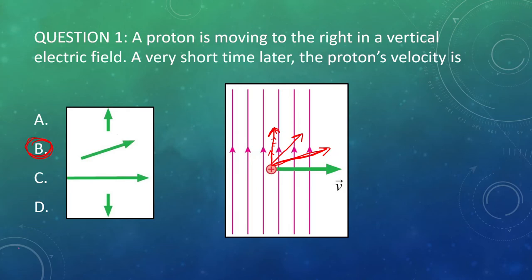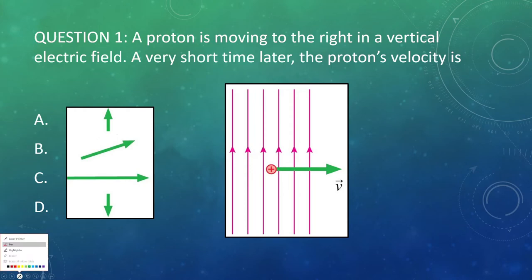If you wanted to see what its full path would look like, it would start by moving horizontally, but as it moves further through the field, it would turn and turn until it aligns with the field, and then keep moving up in the direction of the field.